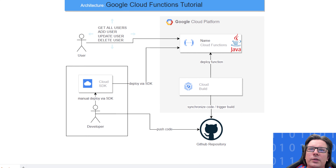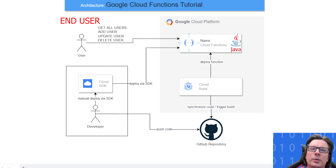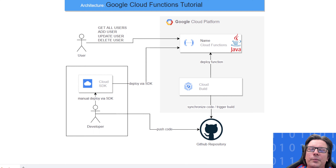We will also have the scenario where the user calls our Cloud Function publicly without any security, and they will be able to get users, add user, update user and delete user. This is the architecture of what we want to achieve.